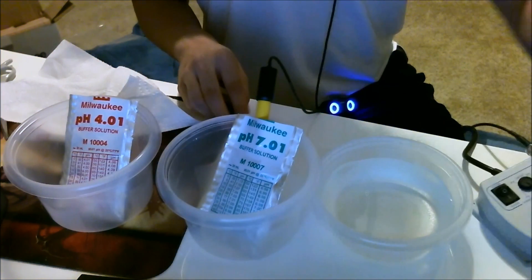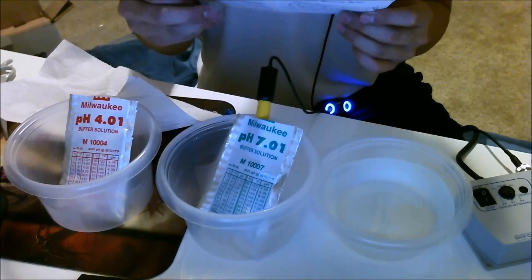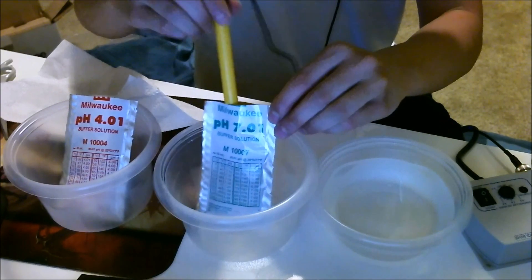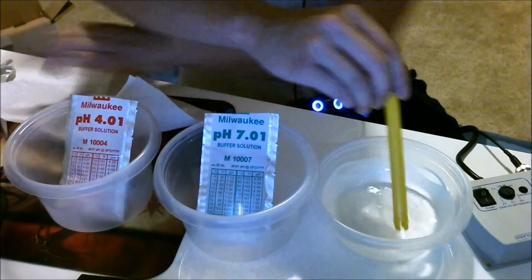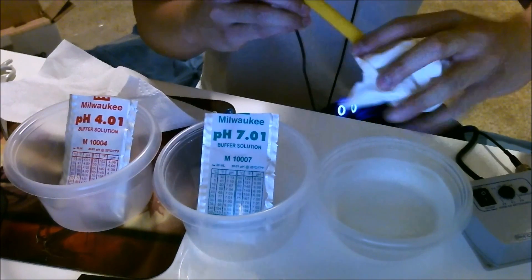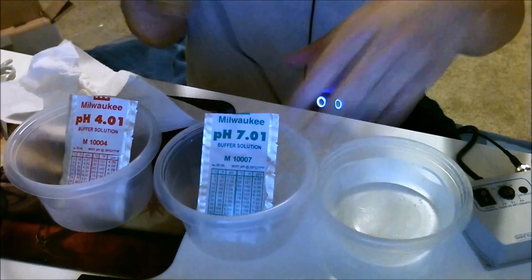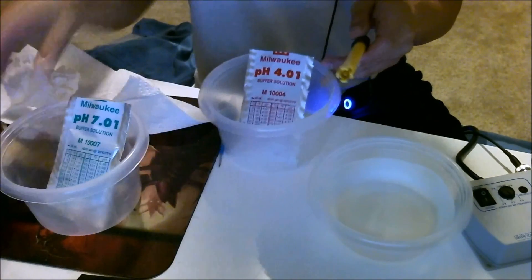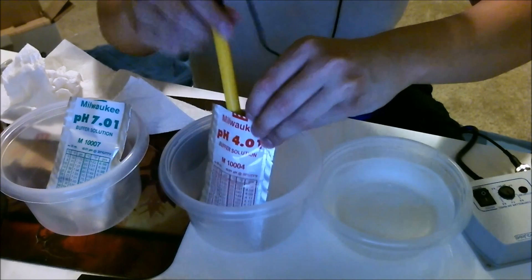Now the instructions say to move to the 4.0 solution. We're going to take this out, give it a rinse so it doesn't get contaminated, and wipe it a little bit. I'm going to swap the 4.0 solution over and insert it in there.